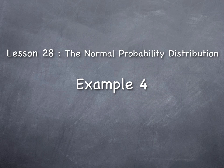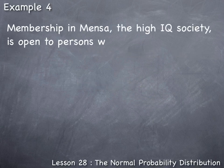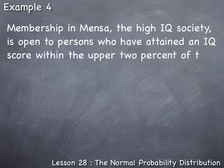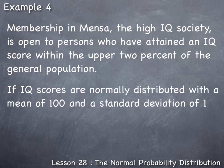Lesson 28: The Normal Probability Distribution, Example 4. Membership in Mensa, the high IQ society, is open to persons who have attained an IQ score within the upper 2% of the general population. If IQ scores are normally distributed with a mean of 100 and a standard deviation of 15, which IQ scores would qualify a person for membership in Mensa?